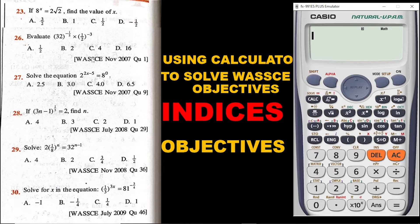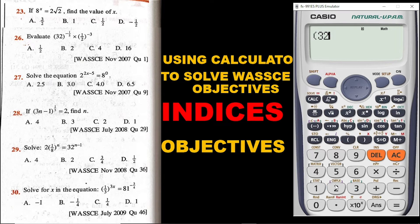Now we move on to the second question. The question says: evaluate (32)^(-1/5) × (1/2)^(-3). What we do is enter this expression on the calculator exactly the way it is in the question. So you open the bracket, we have 32, and then you close the bracket. Then we have the exponent, so you click on the exponent symbol.